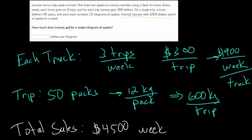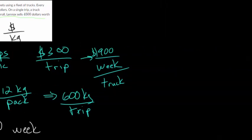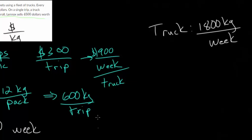We need to figure out how much does Linux get for a single kilogram of apples. We want dollars per kilogram, a unit rate. Dollars divided by kilograms, that's what we need to end up with. To figure that out, we first need to figure out how many total kilograms were used for the week. We know that each trip has 600 kilograms used up, and each truck will take three of those trips in a week. The truck is making three trips in a week, and each trip is 600 kilograms, so 1,800 kilograms per week is delivered in each truck.